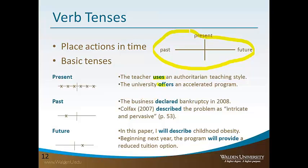The university offers an accelerated program. They offered it yesterday, they're offering it today, they'll offer it tomorrow. This is a basic observation, a basic fact, so I want to use the present tense.